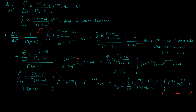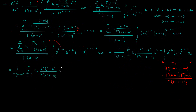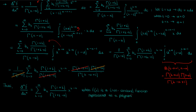Does this integral remind you of anything? If you've seen the video on the beta function, you'll see that this integral is just the beta function of k minus n plus 1 and n minus alpha. We can write this beta function in terms of the gamma function as the product of the gamma functions of the arguments divided by the gamma function of the sum of those arguments. Substituting this into our Caputo fractional derivative and canceling the common gamma terms, we finally end up with the expression for the Caputo fractional derivative of a polynomial series.